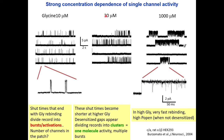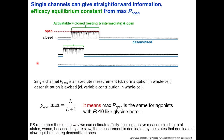As we go up in concentration, bursts cluster into what we call clusters, separated by long desensitized states. It becomes easier to tell when the channel activity comes from one single ion channel molecule, because otherwise we would see double openings. At very high concentration, the channel is either shut and desensitized or mostly open with glycine, with very brief shuttings. At these very high concentrations, we can measure the maximum open probability.